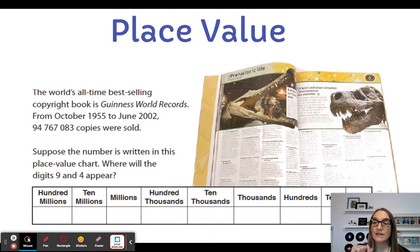the Guinness Book of Records is the all time best selling copyright book. In fact, between October 1955 and 2002, 94,767,083 copies were sold. So the first thing I want to do is, let's just do a bit of a knowledge check, a skill check, see what we remember from grade four and grade five.